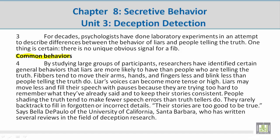Common behaviors. Paragraph 4: By studying large groups of participants, researchers have identified certain general behaviors that liars are more likely to have than people who are telling the truth. Fibbers tend to move their arms, hands, and fingers less, and blink less than people telling the truth do. Liars' voices can become more tense or high. Liars may move less and fill their speech with pauses because they are trying too hard to remember what they have already said and to keep their stories consistent. People shading the truth tend to make fewer speech errors than truth-tellers do. They rarely backtrack to fill in forgotten or incorrect details — their stories are too good to be true, says Bella de Paulo of the University of California, Santa Barbara, who has written several reviews in the field of deception research.